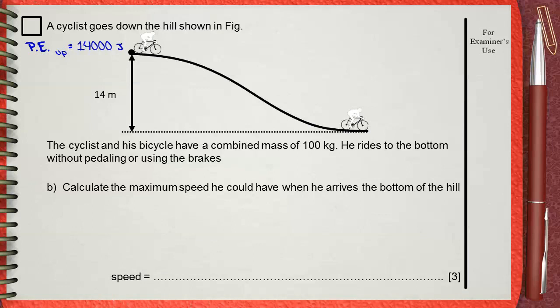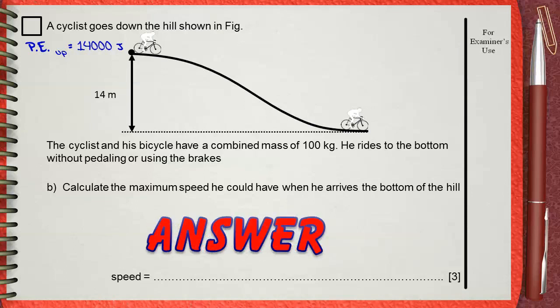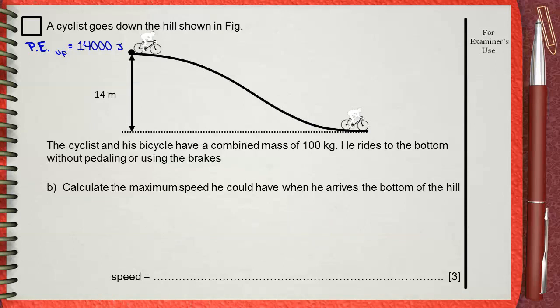Part B: calculate the maximum speed he could have when he arrives at the bottom of the hill. In this question, we consider it as a free fall case, which means there is no resistance and no friction opposing the motion of the bicycle. If we assume free fall, then the potential energy at the top must equal the kinetic energy at the bottom.